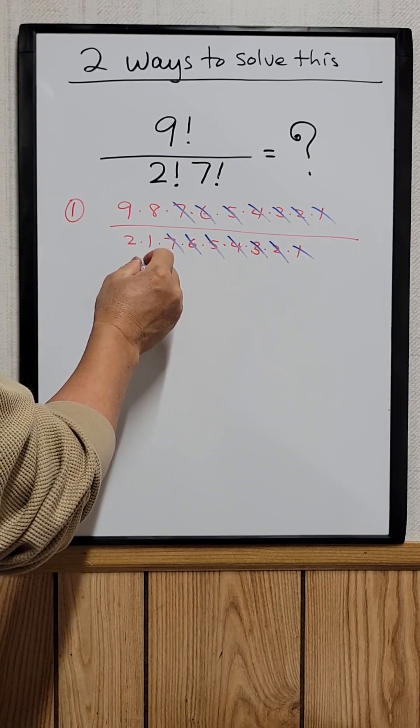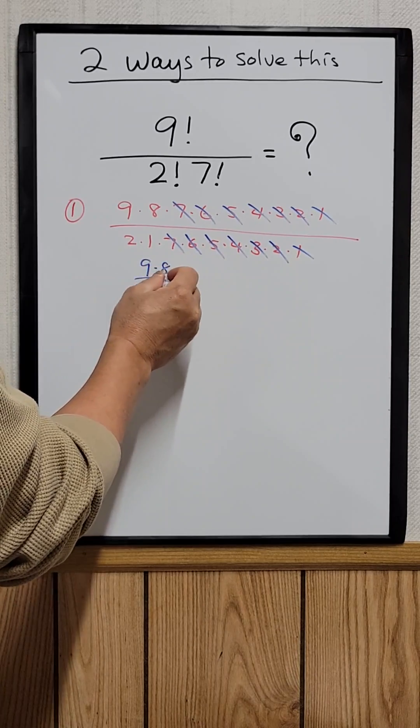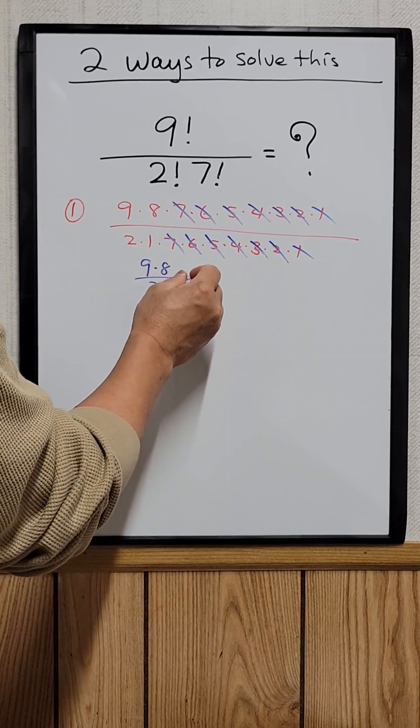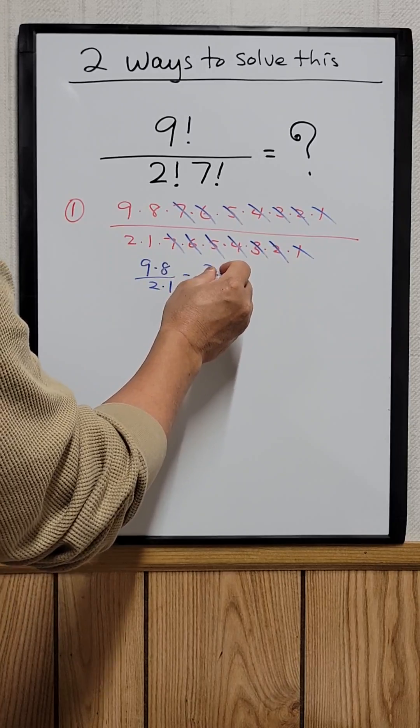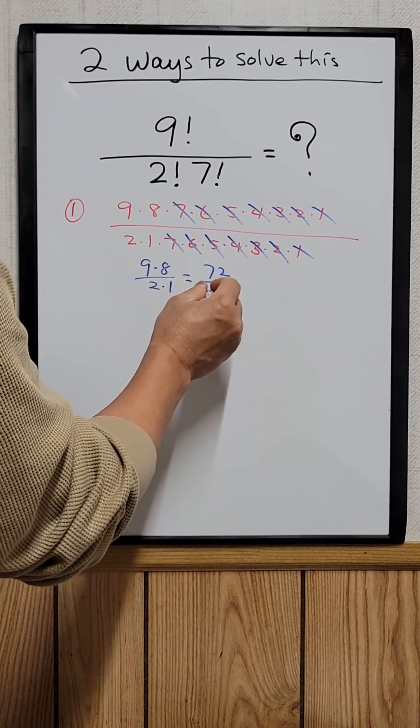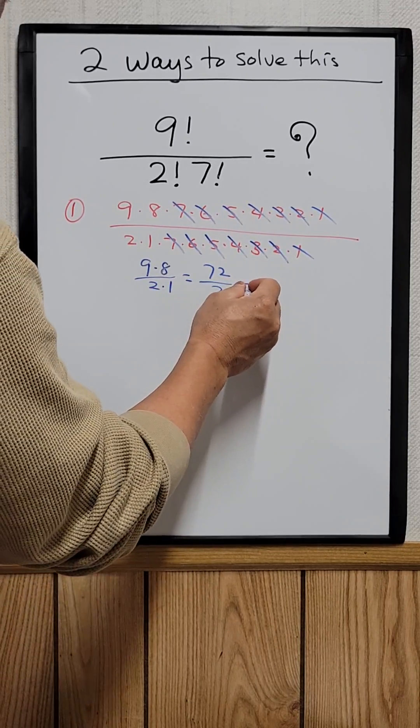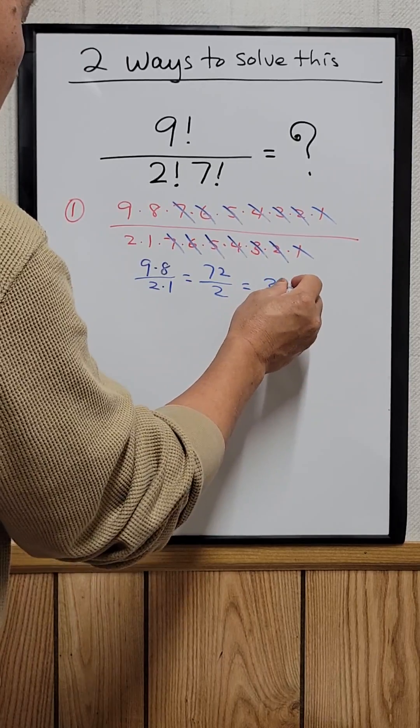So all you have left is just nine times eight over two times one, which equals seventy-two divided by two, which is thirty-six.